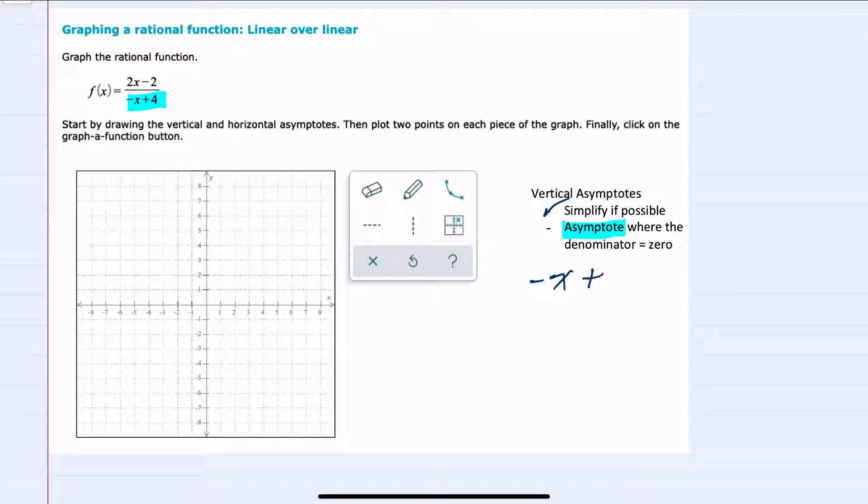So negative x plus 4 equals 0. To solve for x, we can move the 4 over to the other side. Negative x equals negative 4. Divide by negative 1 on both sides, and x equals 4 is our vertical asymptote. So we graph the vertical line x equals 4.